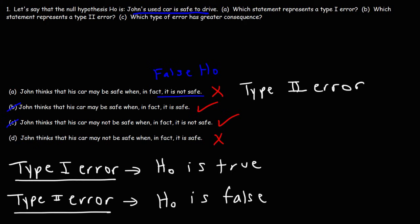Looking at the other option, answer choice D agrees with the null hypothesis — the car is safe to drive. However, he doesn't accept it; he rejects the car and doesn't feel that it's safe. So this is a type 1 error: he rejects the null hypothesis when it is true. That's a simple way to distinguish a type 1 error from a type 2 error.